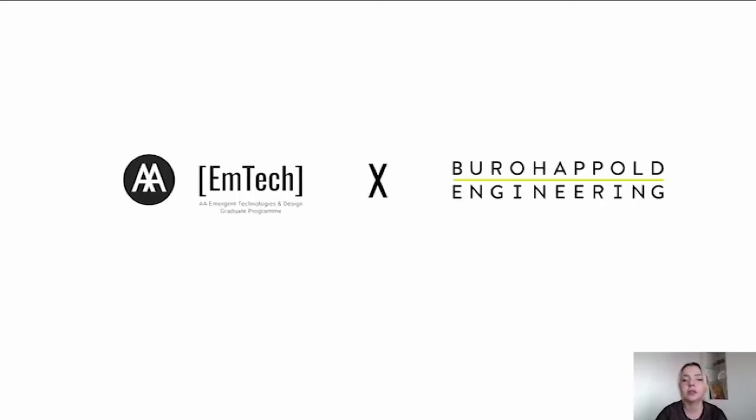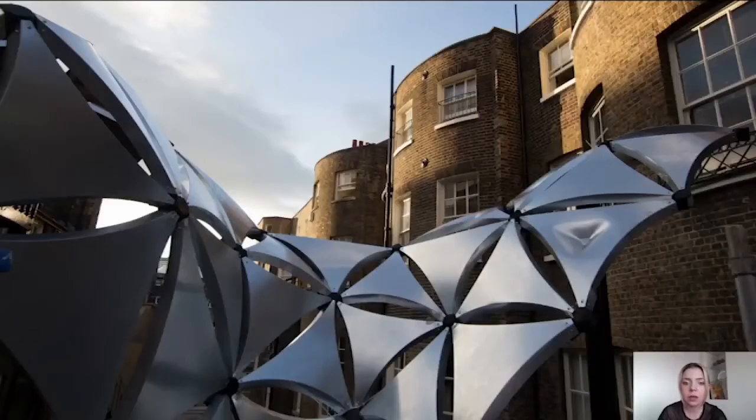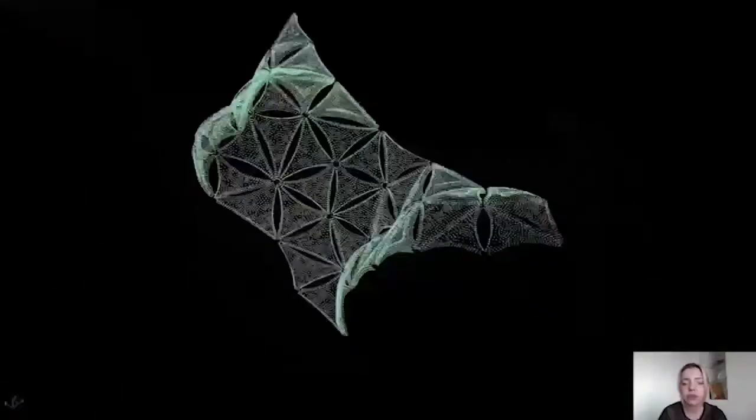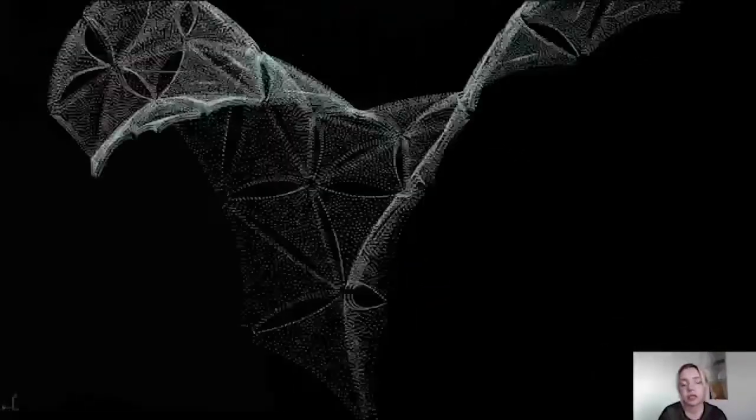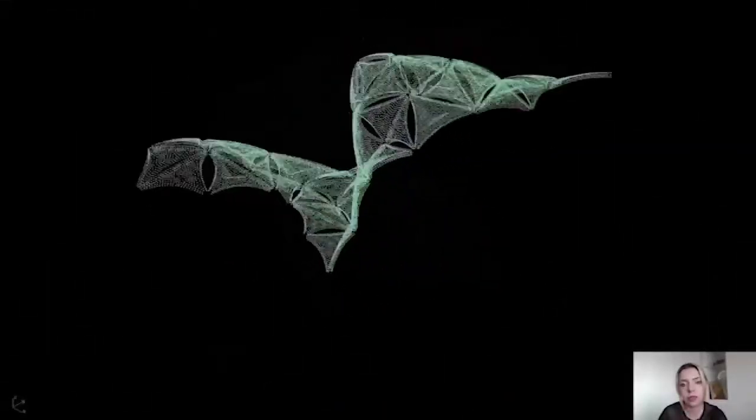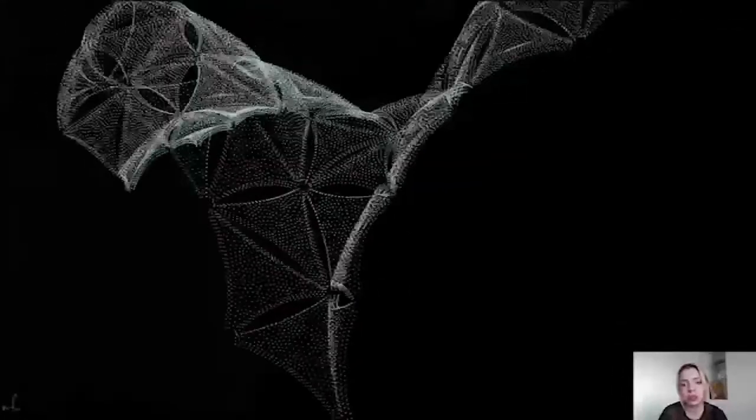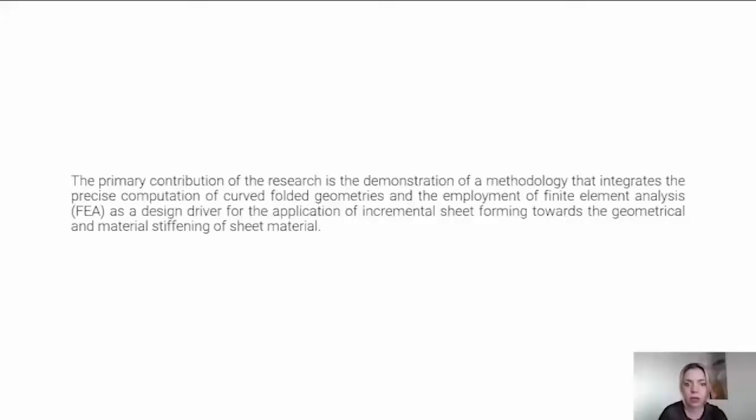So starting with our collaboration between EmTech and Bureau-Happold Engineering, our research agenda has focused on integrating two fabrication techniques, curved folding and robotic incremental sheet forming, for the generation of lightweight stiff building elements. The primary contribution of the research is the demonstration of a methodology that integrates the precise computation of curved folded geometries and the employment of finite element analysis as design drivers for the application of incremental sheet forming, for the geometrical and material stiffening of sheet material.